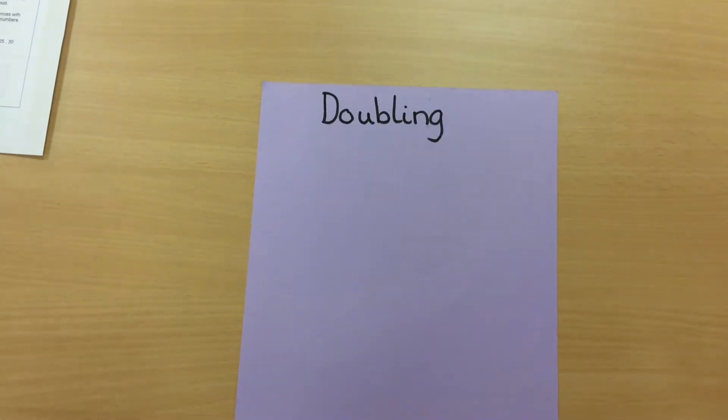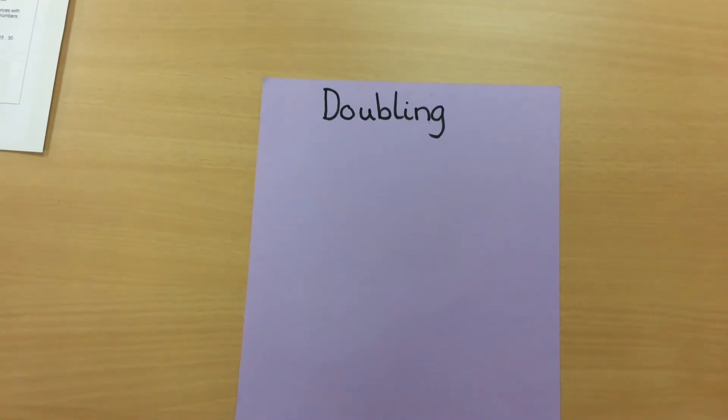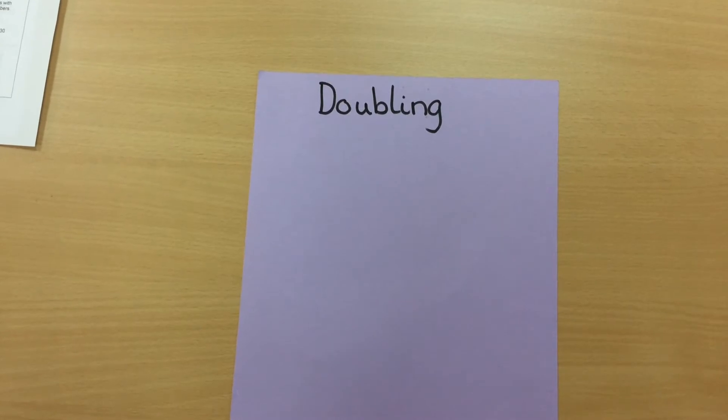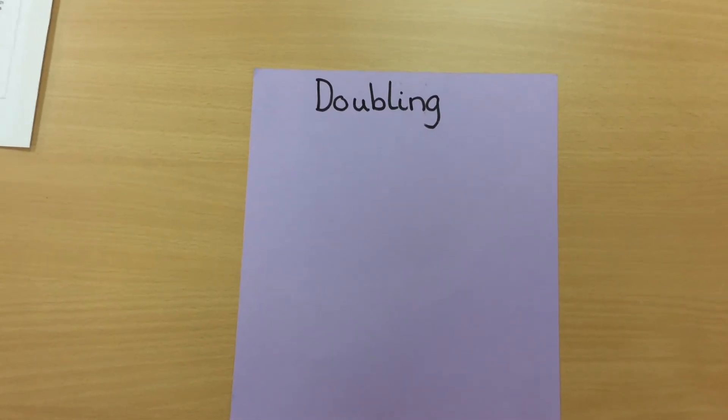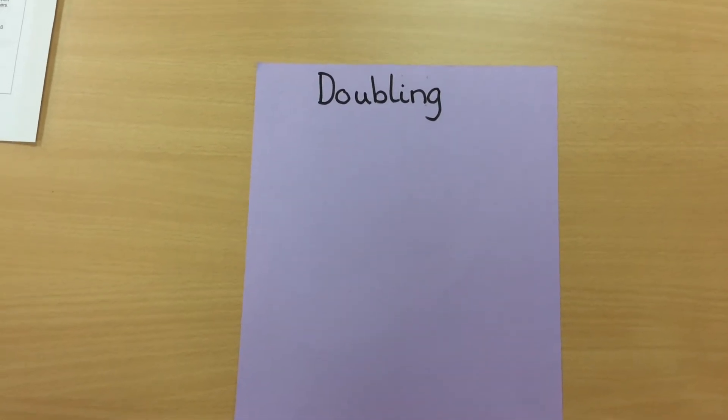Multiplication in year one: When we first start looking at multiplication in year one, we start to think of it in terms of doubling a number. So it's a multiplication of two, but the children will become familiar with the words doubling and the inverse halving the number.